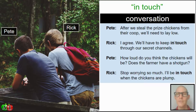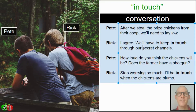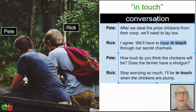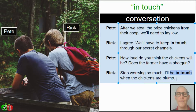Rick is the first to use the idiom — 'we'll have to keep in touch through our secret channels' means they need to maintain communication with each other through secret channels. Rick also says 'be in touch' — 'I'll be in touch' means Pete isn't sure exactly when Rick will contact him, but Rick will communicate with him somehow.